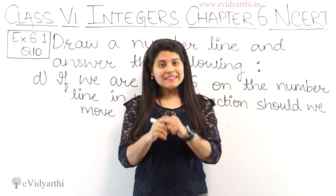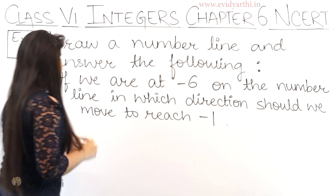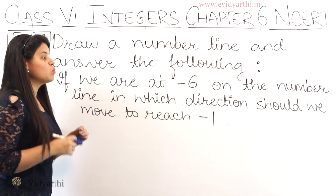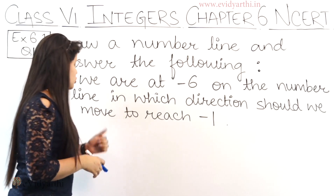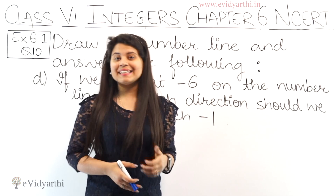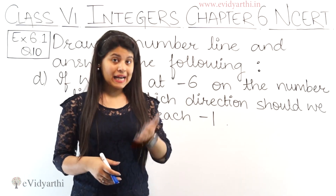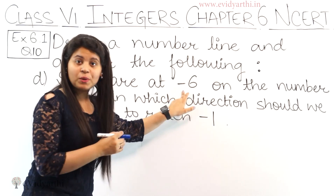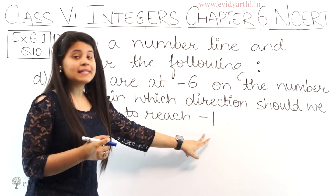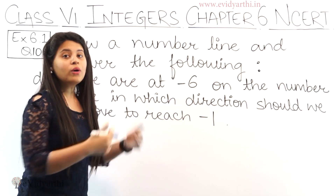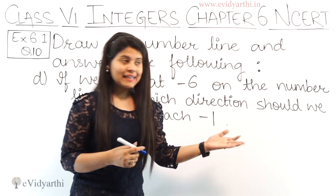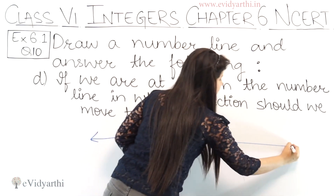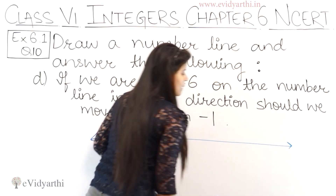Now coming to part D. In part D: if we are at minus 6 on the number line, in which direction should we move to reach minus 1? This is similar to the last question. We are at minus 6 and need to reach minus 1 — do we go left or right? For that, again, let's draw the number line here. This is my number line.